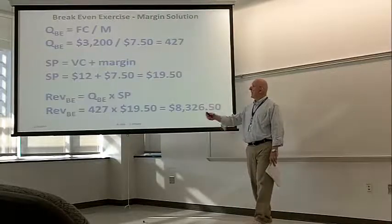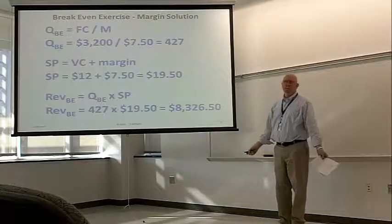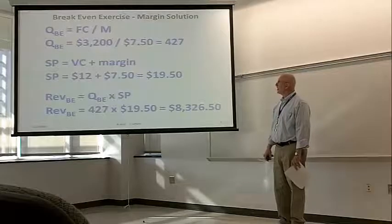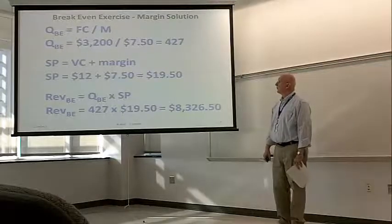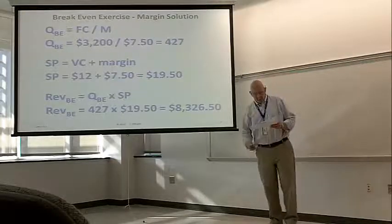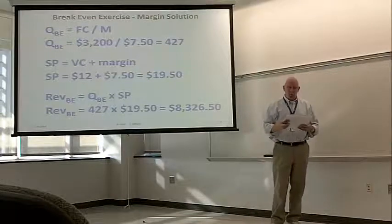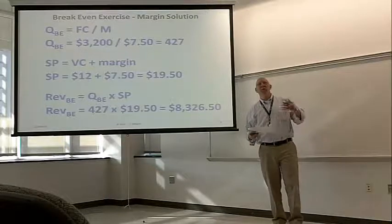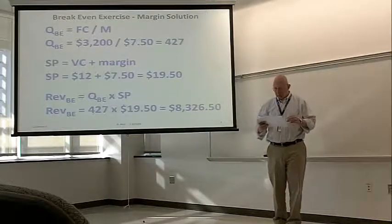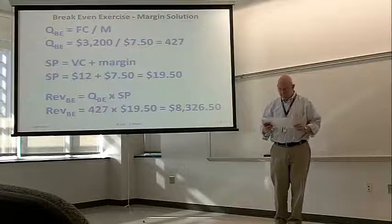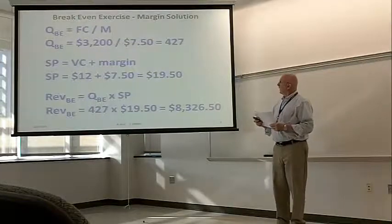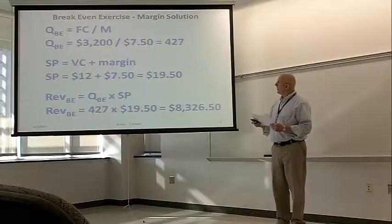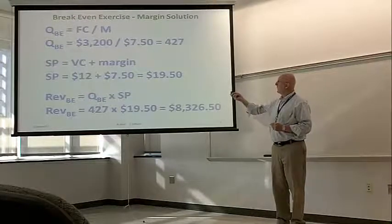And the answer is, there is that equation, quantity breakeven equals fixed cost divided by margin, which in this case is $3,200 divided by $7.50 or 427 units that have to be made and sold to breakeven. Notice we did not need the variable cost for that. All we needed was the margin.